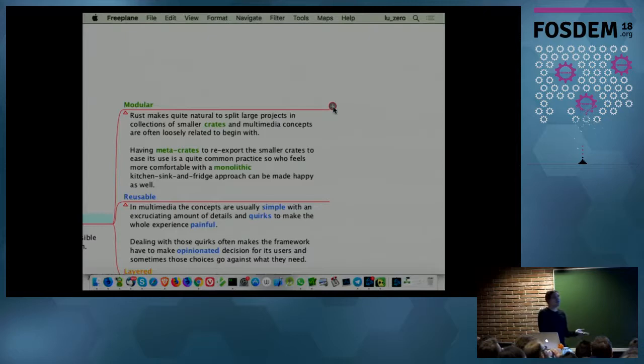How am I doing that? Modular. Rust has the concept of crates, works quite well to do that. Every single component, every single codec, every single format lives in a standalone crate. Then, if you want to not care about details, we have crates that just re-export collection of different formats, collection of different codecs.